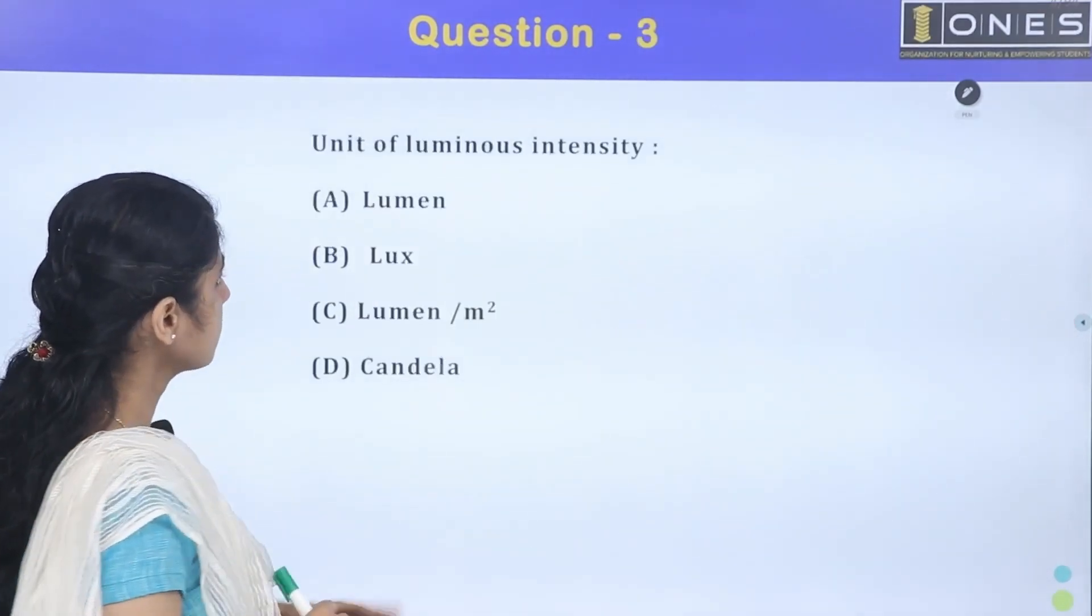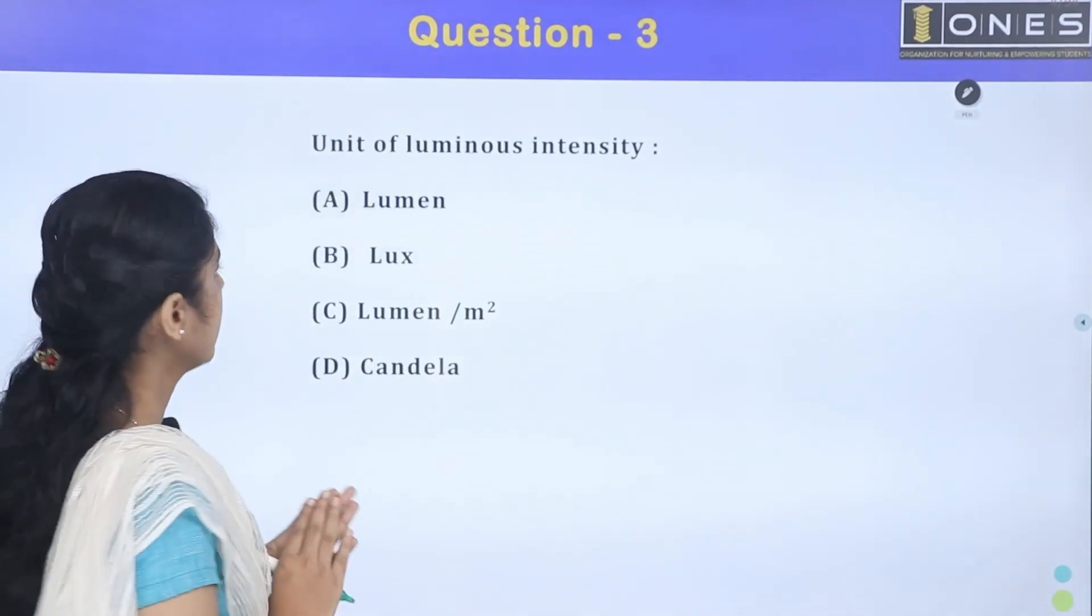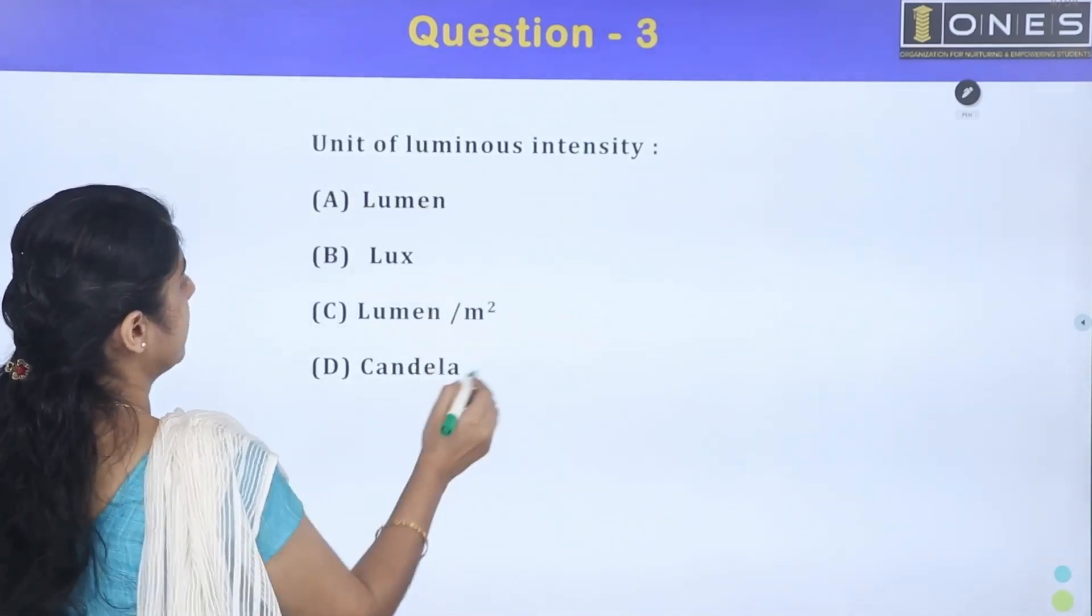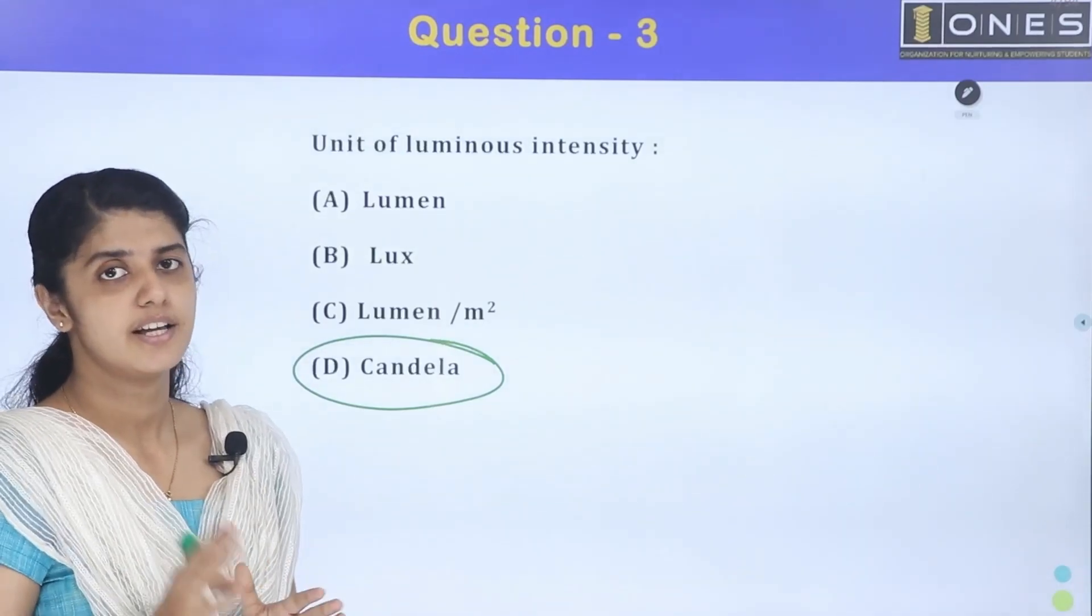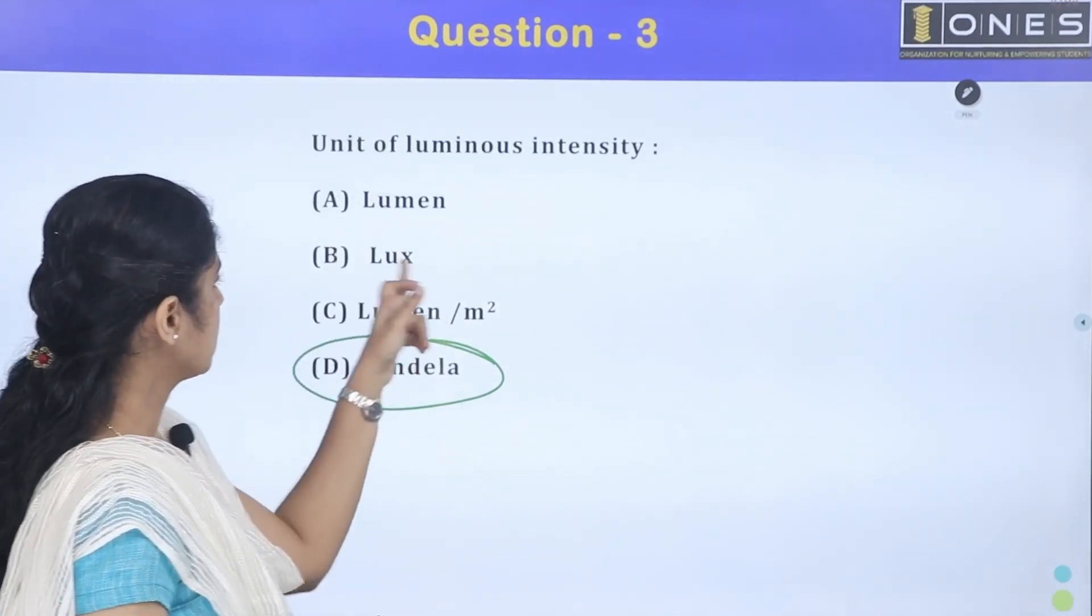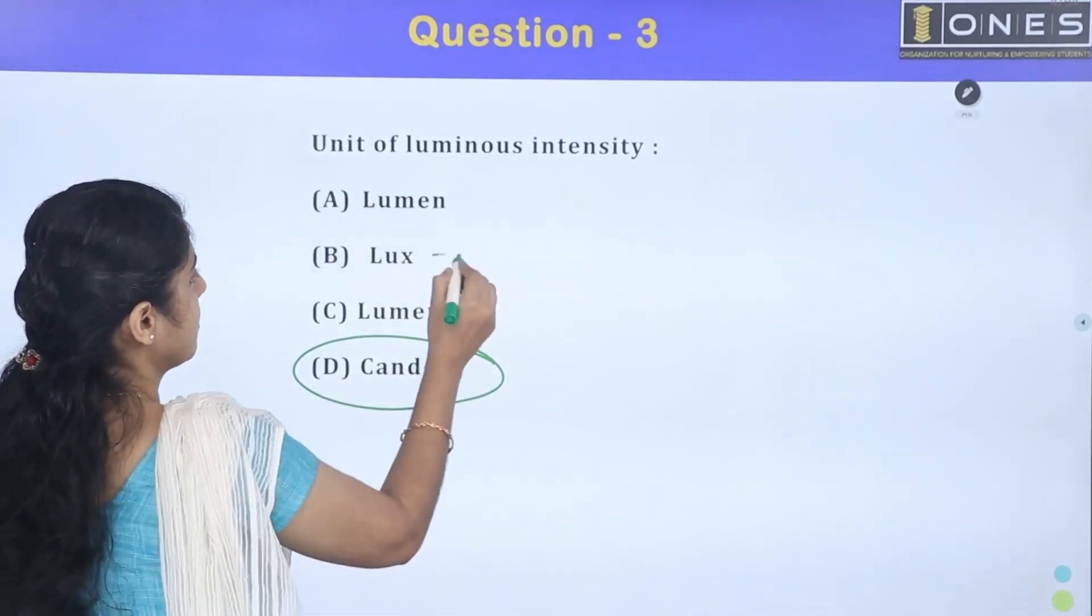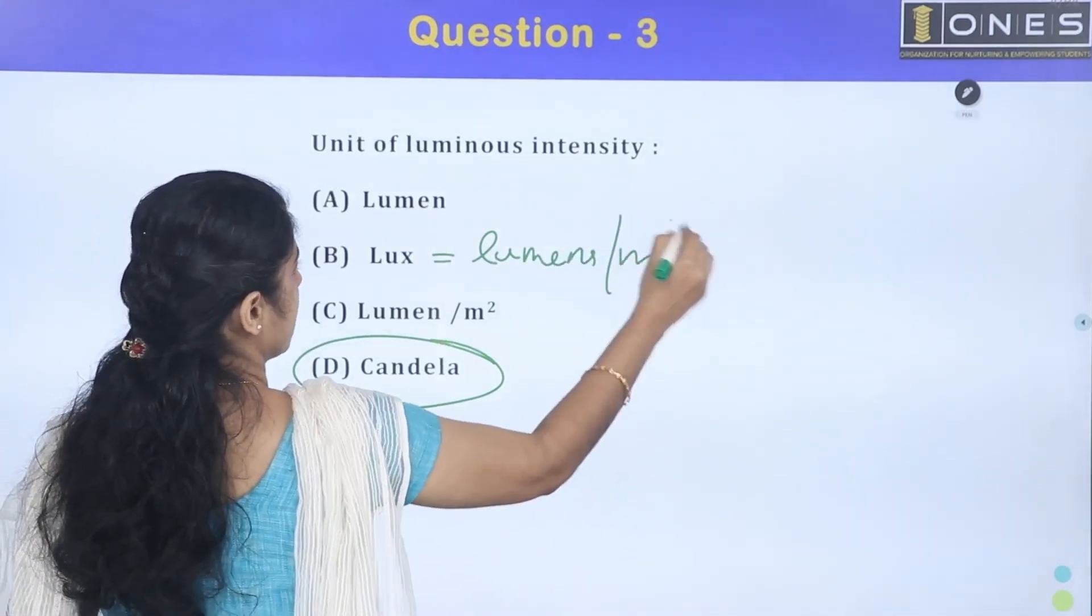Next question: Unit of luminous intensity. Illumination is a unit of luminous intensity. The standard unit is candela. Lux per meter square means illuminance.